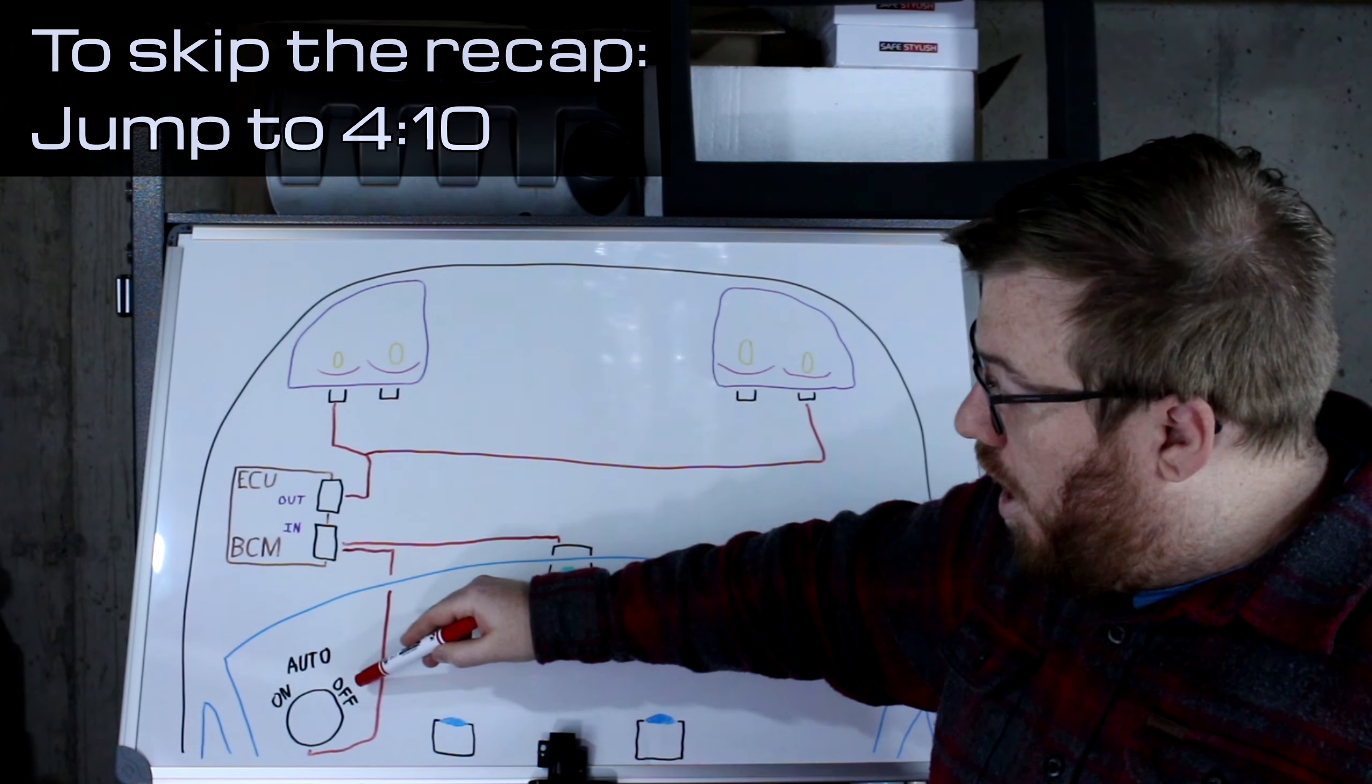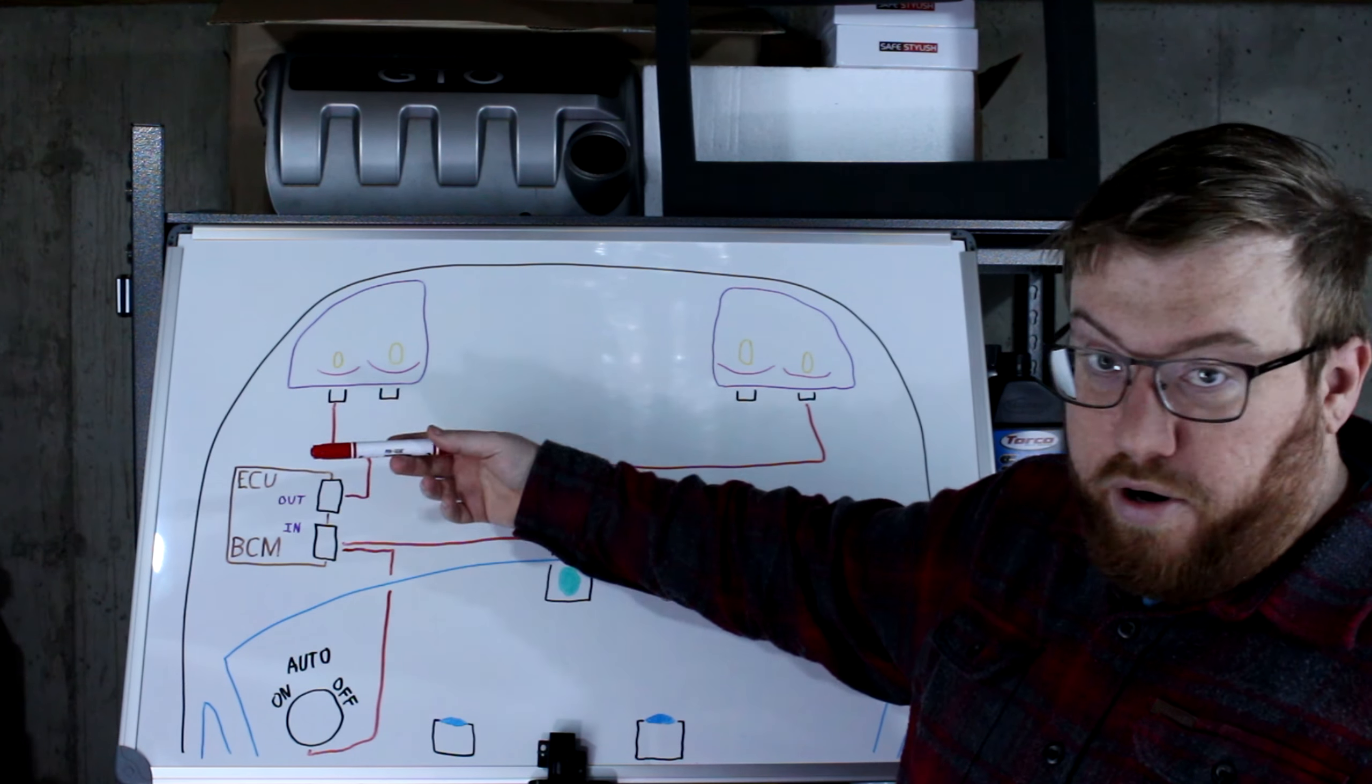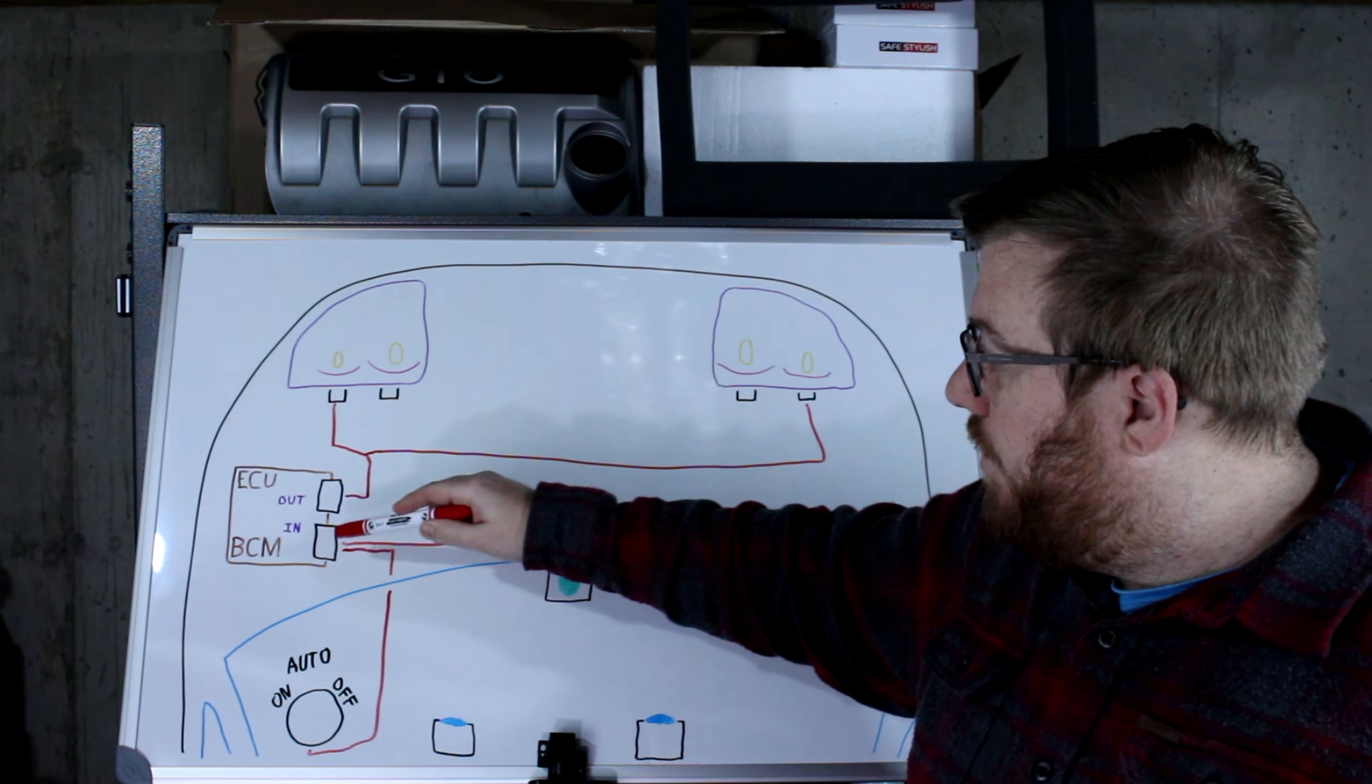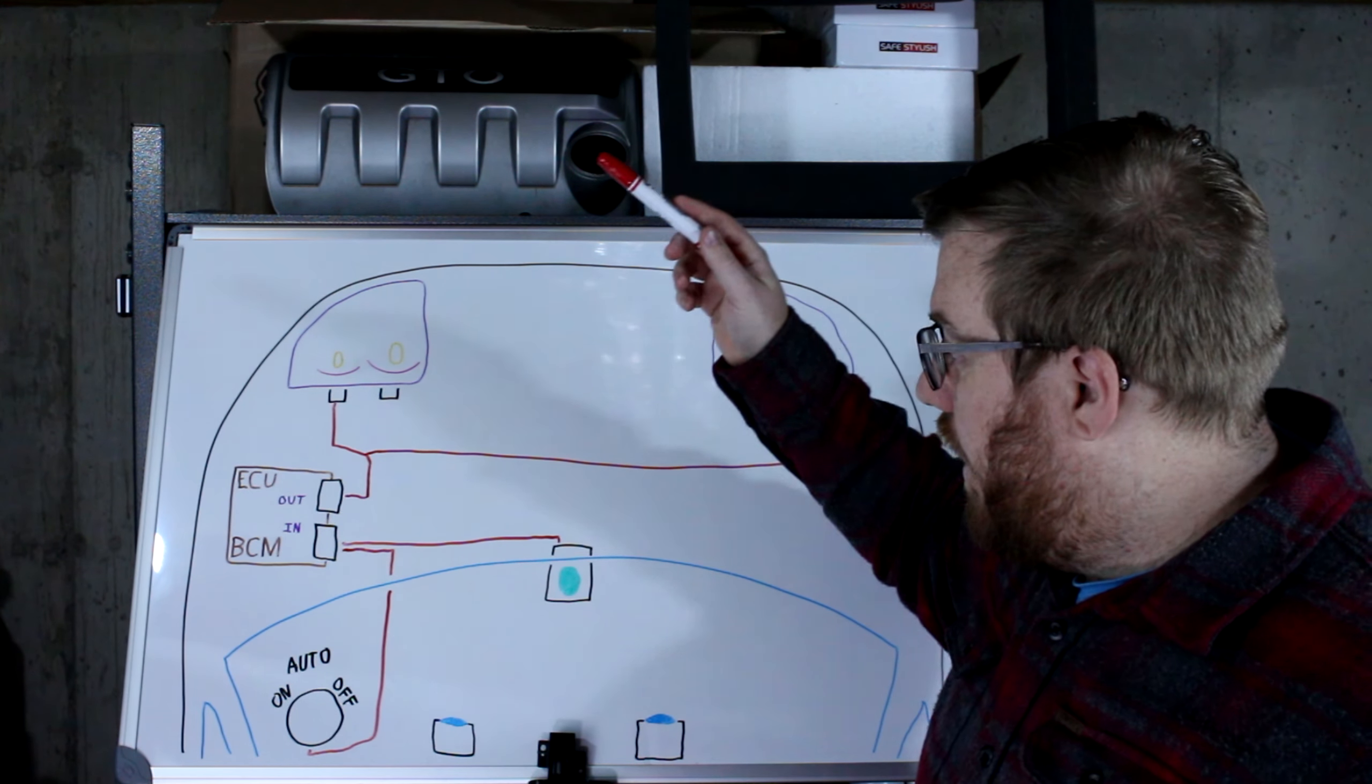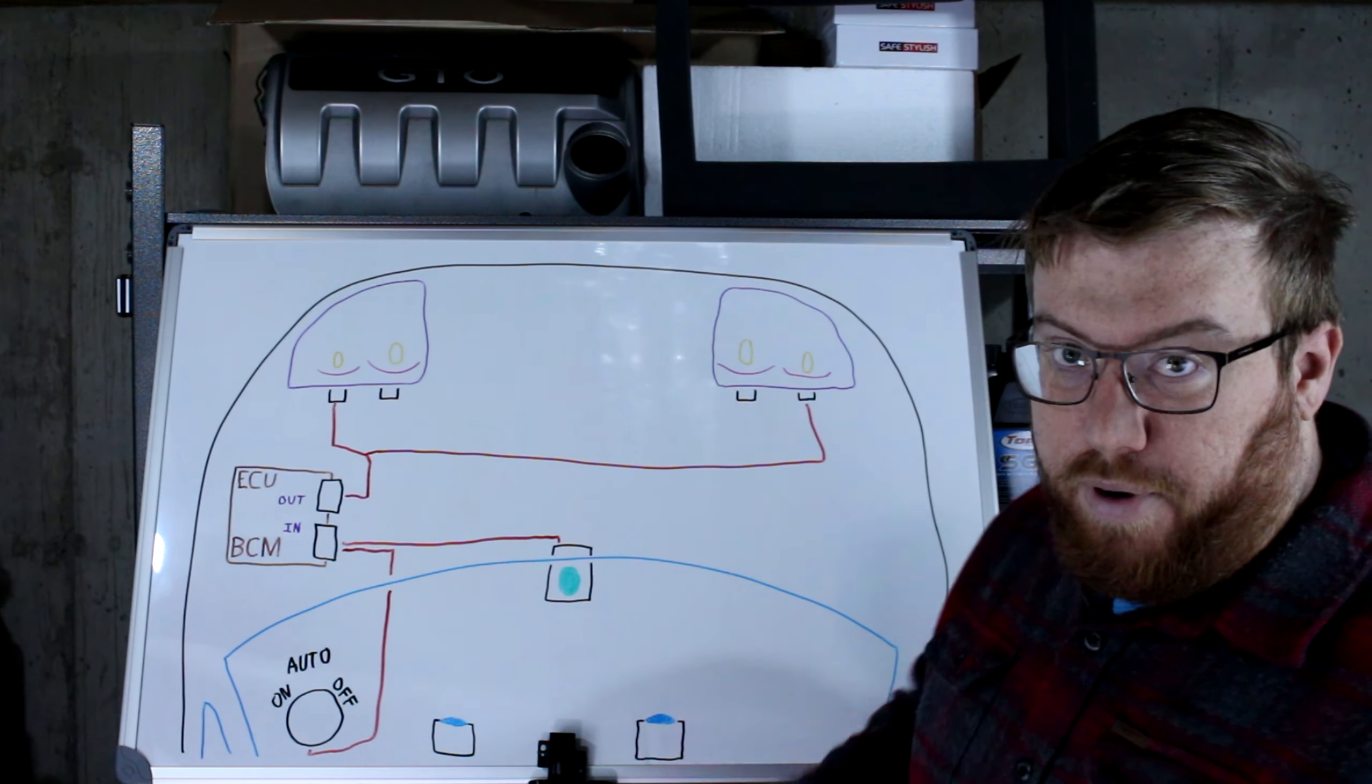This is starting to look a little complicated. I'm going to run through all this. In summary, off is just going to be off. Your signal goes to the computer, the computer knows they want it off. Same with on. You send a signal via the switch to the computer that you want it on. The computer knows it doesn't matter what's going on, we need to have those headlights turn on, and it does that.